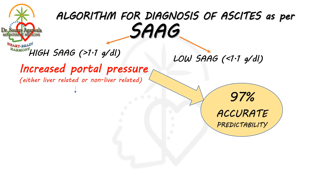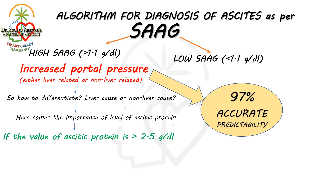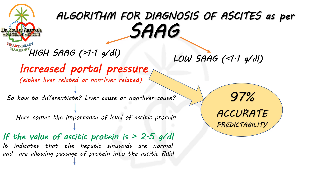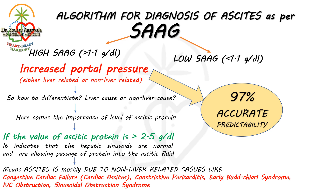How do we differentiate between a liver cause or non-liver cause of ascites? Here comes the importance of the level of ascites protein. If the value of ascites protein is more than 2.5 gram per deciliter, it indicates that the hepatic sinusoids are normal and are allowing the passage of protein into the ascites fluid. This means ascites is mostly due to non-liver-related causes like congestive cardiac failure (cardiac ascites), constrictive pericarditis, early Budd-Chiari syndrome, or IVC obstruction and sinusoidal obstruction syndrome.